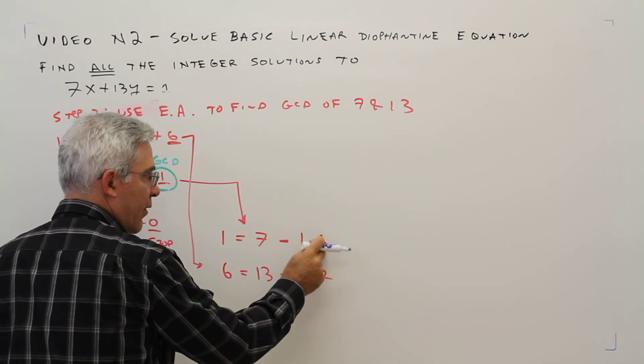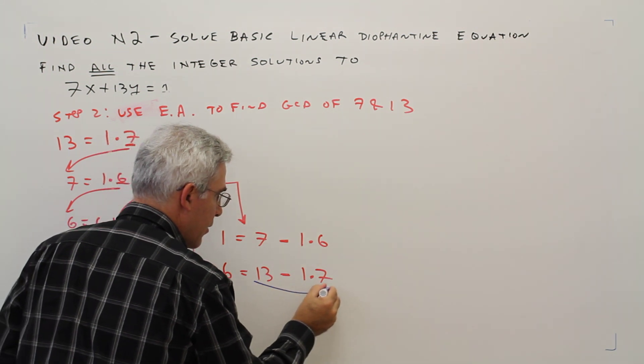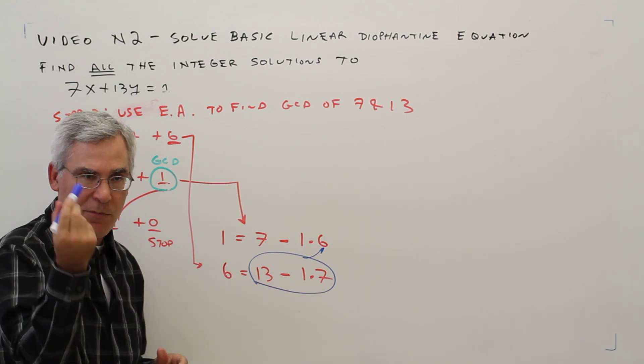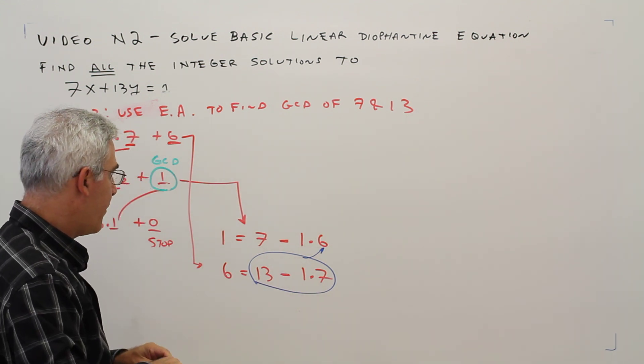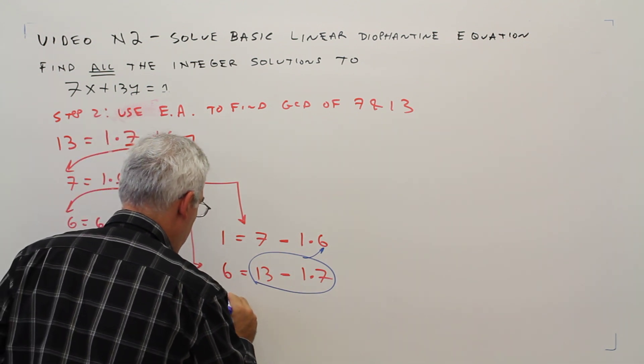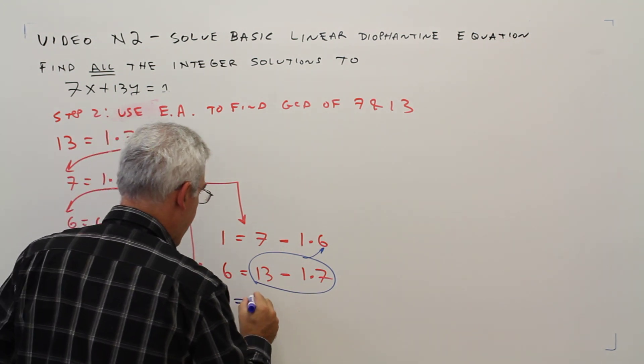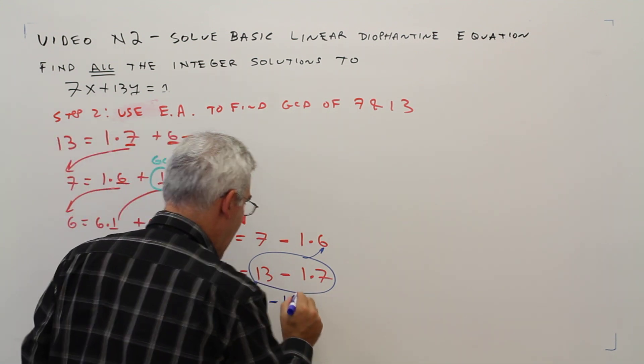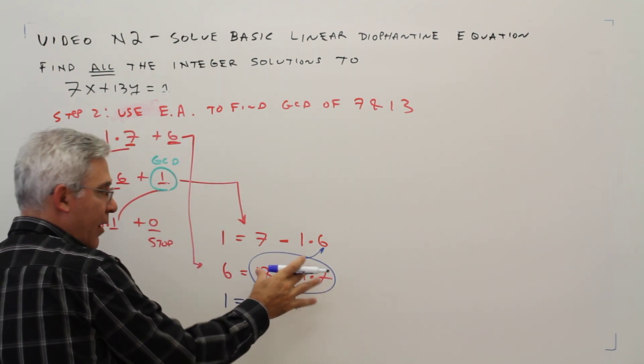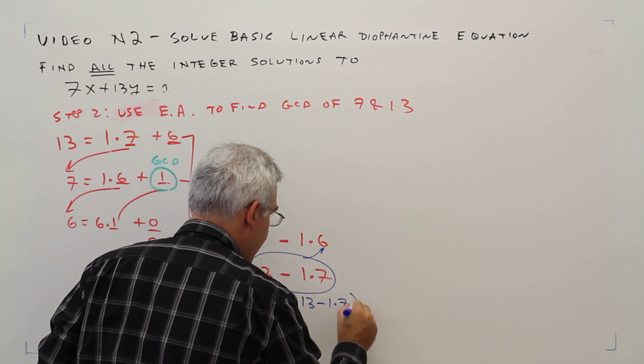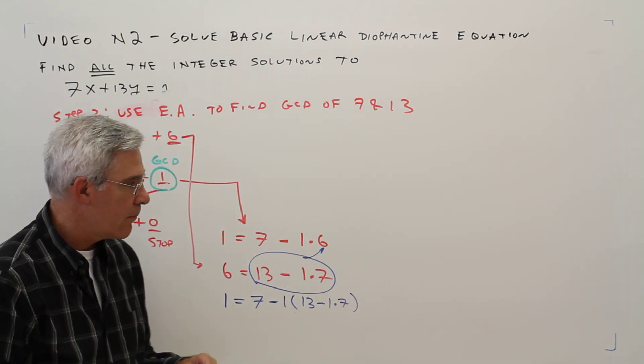So notice there's a 6 there. All of this is going into that step right there. I'll just use blue just to make it more colorful. So I'll write that below. So now I've got 1 equals 7 minus 1, all of this stuff, 13 minus 1 times 7.